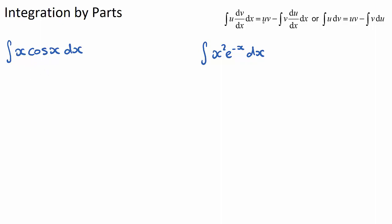Let's look at the integration by parts formula. The integral of u·v' dx equals u·v minus the integral of v·u' dx. This can also be written as the integral of u dv equals u·v minus the integral of v du. The simplest way to write it: the integral of u·v' equals u·v minus the integral of v·u'.